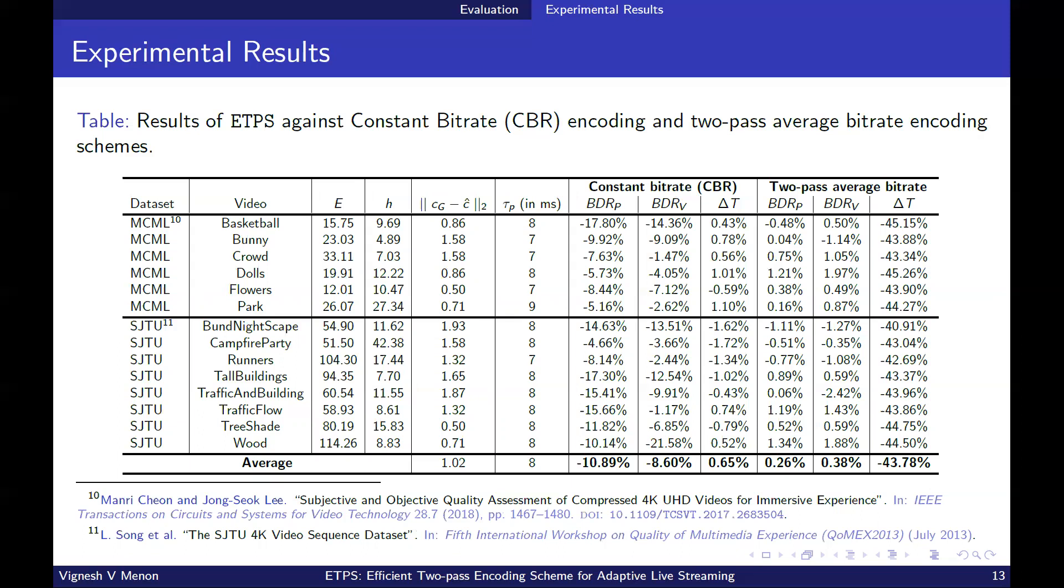On average, the Bjontegaard delta rate with respect to PSNR and Bjontegaard delta rate with respect to VMAF of ETPS are minus 10.89% and minus 8.60% respectively compared to the CBR encoding. This implies ETPS has better compression efficiency compared to CBR encoding. Also, it is observed that ETPS yields an average Bjontegaard delta rate of around 0.26% and 0.38% respectively for PSNR and VMAF compared to the state-of-the-art two-pass ABR encoding scheme. But we observe an average encoding time saving of 43.78% compared to the two-pass ABR encoding scheme.